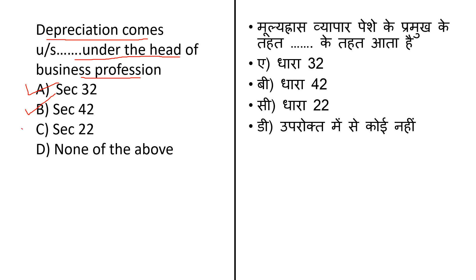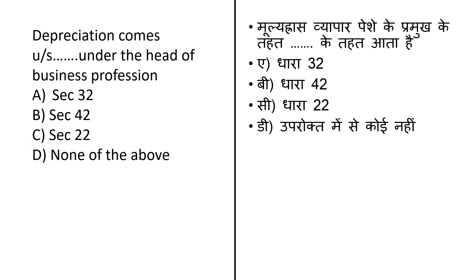Third option is Section 22, which covers income from house property. The annual value of property consisting of any building or land, of which the assessee is the owner — other than the portion occupied for business or profession — shall be charged to income tax under the head 'Income from House Property.' The last option is none of the above. As per the explanation, the correct answer is option A — depreciation comes under Section 32 under the head of business or profession.